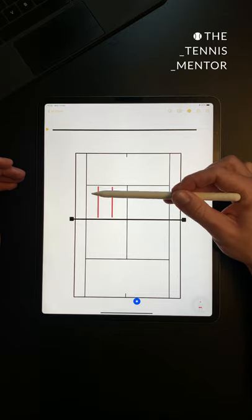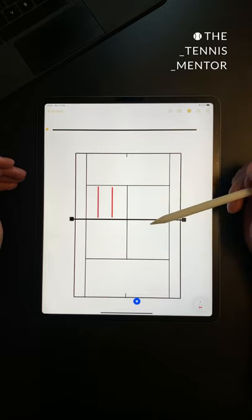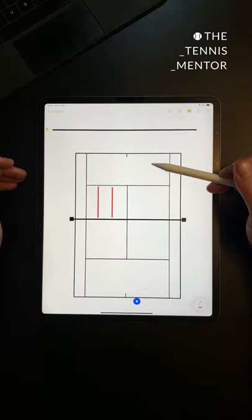Aim 10 serves out wide, see how many you can get into that zone. Aim 10 serves down the body, see how many you can get in there, and aim 10 serves down to the tee. Keep track of your scores so that you can see if you're improving each time you train.